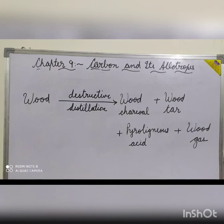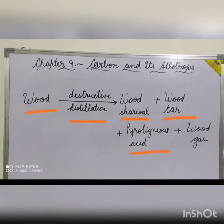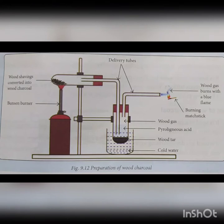Wood charcoal is prepared by the destructive distillation of wood. Destructive distillation means the process of heating organic substances in the absence of air. In destructive distillation of wood, it is heated in the absence of air, resulting in the formation of four products: wood charcoal, wood tar, pyroligneous acid and wood gas. One kilogram of wood on destructive distillation yields about 250 grams of wood charcoal as a residue. Now we will do an activity to demonstrate the preparation of wood charcoal.